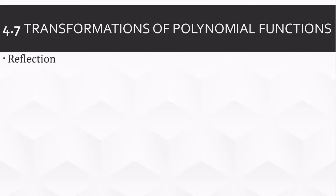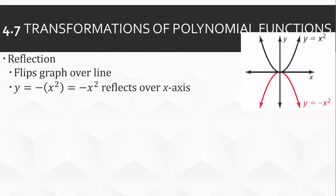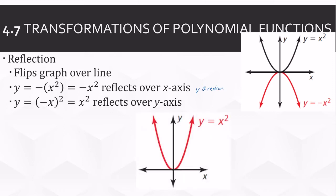Here we also have reflections, which flip the graph over a line. And here, this is outside the parentheses, so it goes in the y direction and over the x-axis, it goes up and down. Here, when it's inside of the parentheses, it goes left and right, over the y-axis.